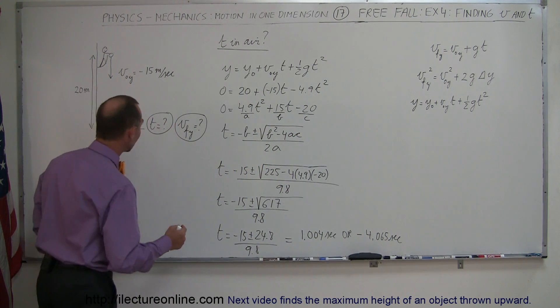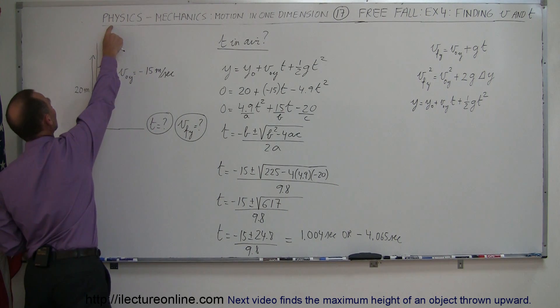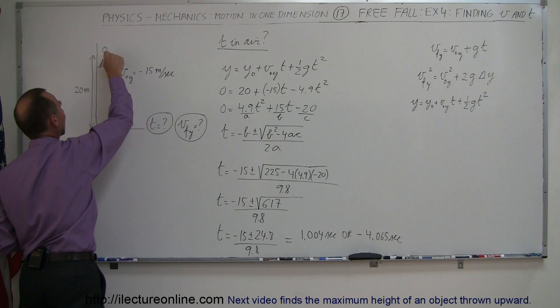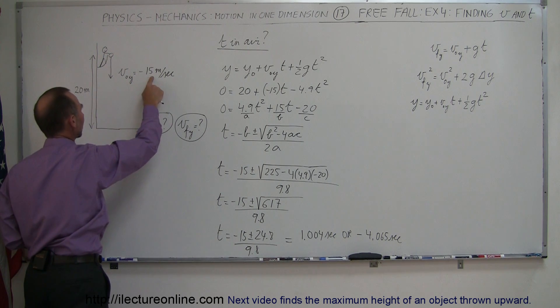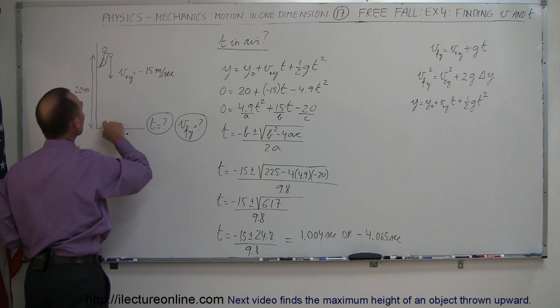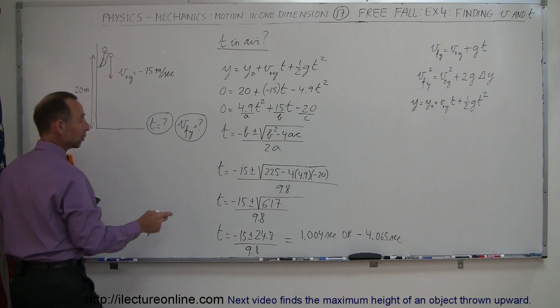What does the negative answer mean? Well, if you had thrown the ball from the ground, up past this point, reaching a maximum height, coming back down, when it gets back to this point, it'll be moving downward at minus 15 meters per second, it would have taken 4.065 seconds to reach this point. The remaining time before it hits the ground again would